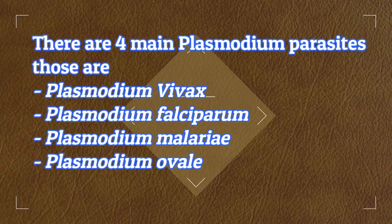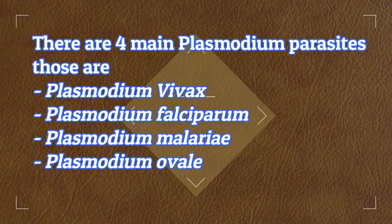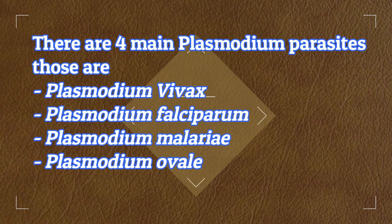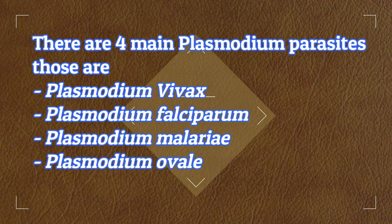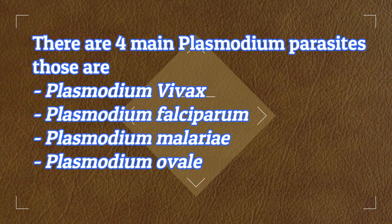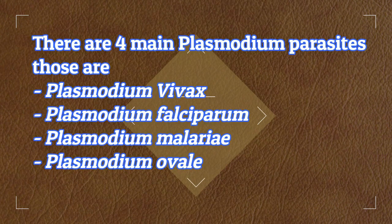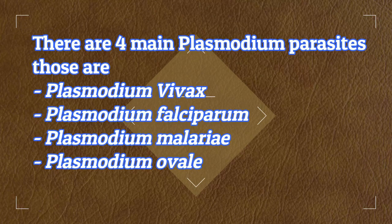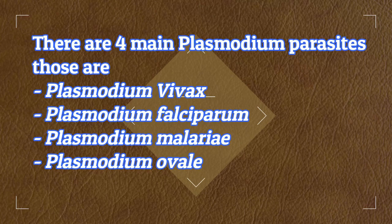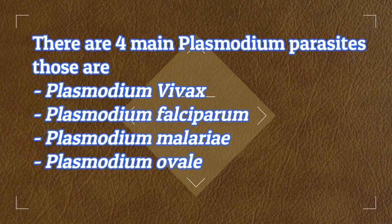There are four main Plasmodium parasites. Those are Plasmodium vivax, Plasmodium falciparum, Plasmodium malariae, and Plasmodium ovale.